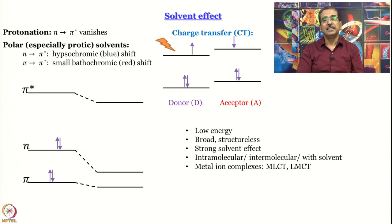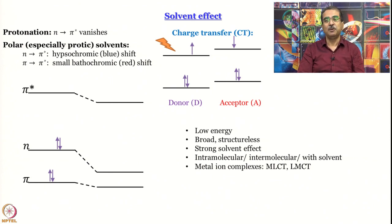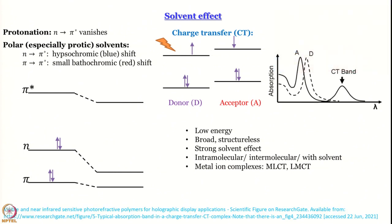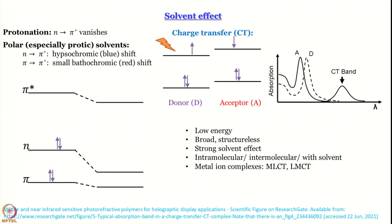Charge transfer bands show strong solvent effects because there is charge separation, and a polar solvent stabilizes charge transfer states to a large extent. To get donor and acceptor together: the solvent itself can be a donor or acceptor surrounding the solute; both solutes at high concentration; or a donor and acceptor covalently bonded together — the easiest case for charge transfer. In metal ion complexes, charge transfer involves the ligand and metal; depending on direction it is called metal-to-ligand or ligand-to-metal charge transfer. The schematic absorption spectrum shows CT bands appearing at longer wavelength (lower energy), broad and structureless — these are the characteristics of charge transfer bands.